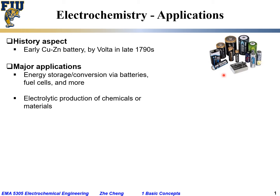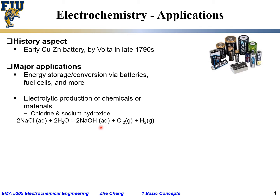Electrochemistry is also the foundation for electrolytic production of many important chemicals and materials. For example, in the chlorine industry, the production of chlorine gas as well as sodium hydroxide typically goes through an electrochemical reaction. The reactant is sodium chloride dissolved in water, and the products involve sodium hydroxide solution, chlorine gas, and hydrogen gas. We'll talk about how to understand such a reaction from an electrochemistry point of view later.